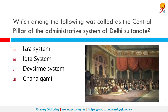Which among the following was called the central pillar of the administrative system of the Delhi Sultanate? That would be the Iqta system. Iqta was an Islamic practice of tax farming that became common in Muslim Asia during the Buyid dynasty. The prominent orientalist Claude Cahen described the Iqta as a form of administrative grant.